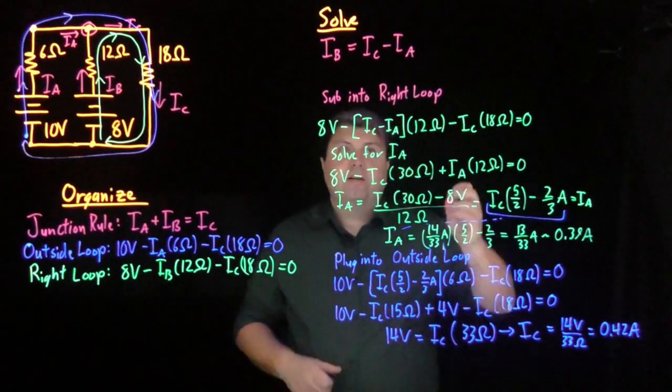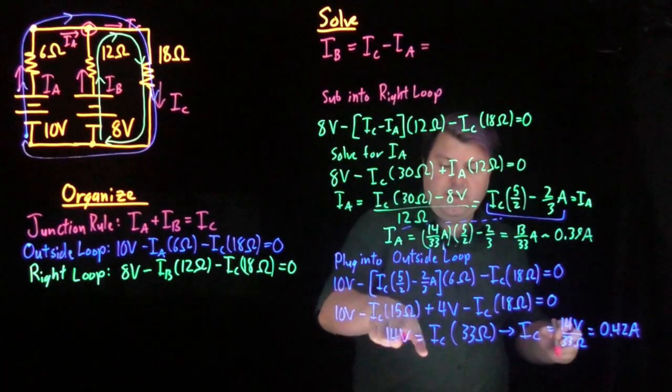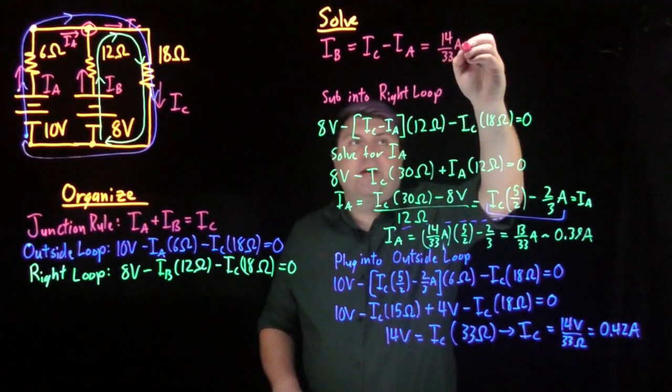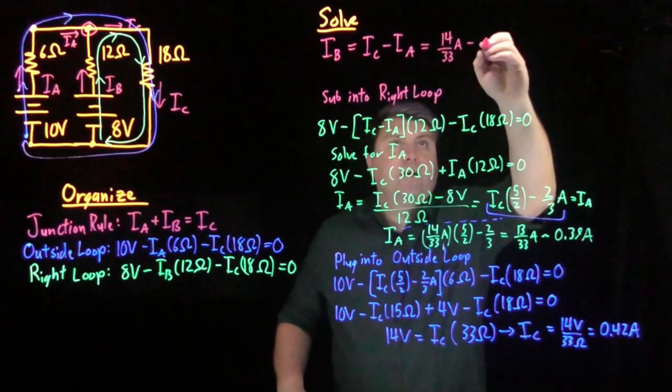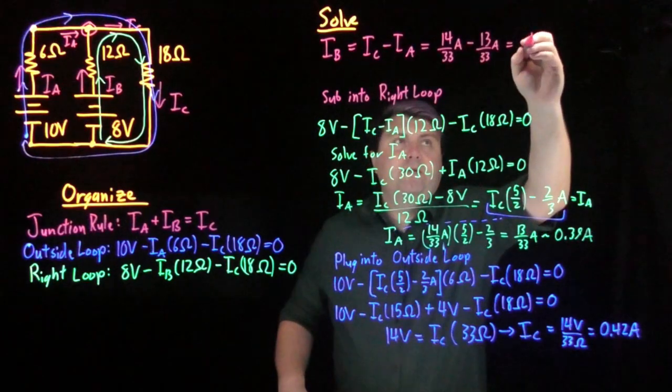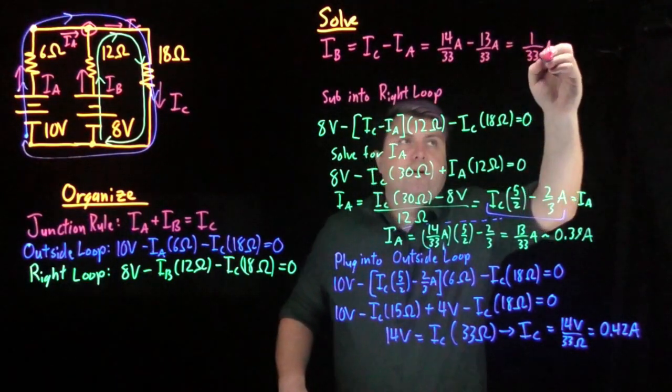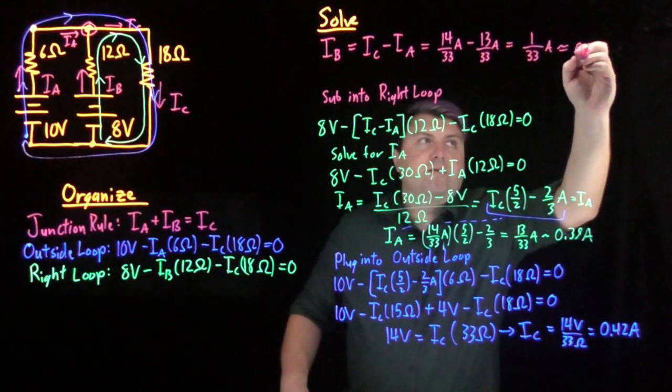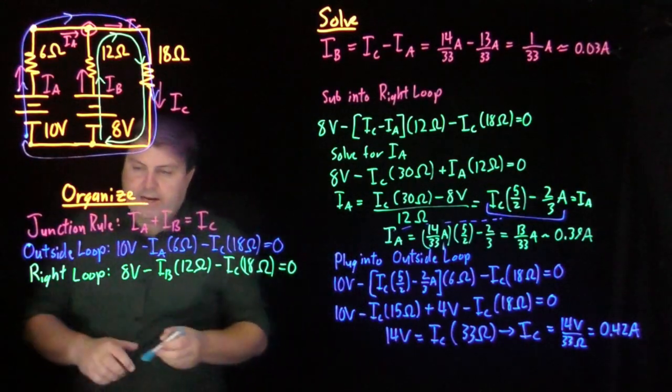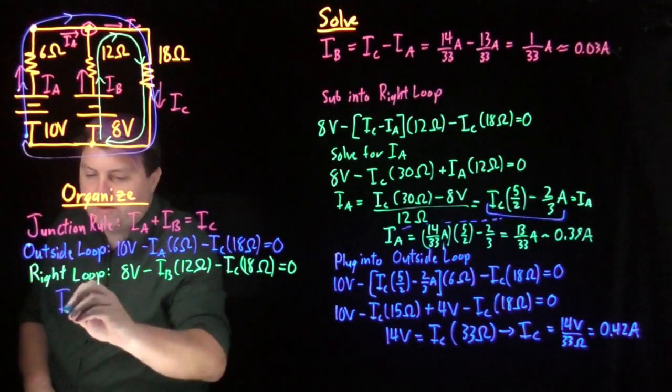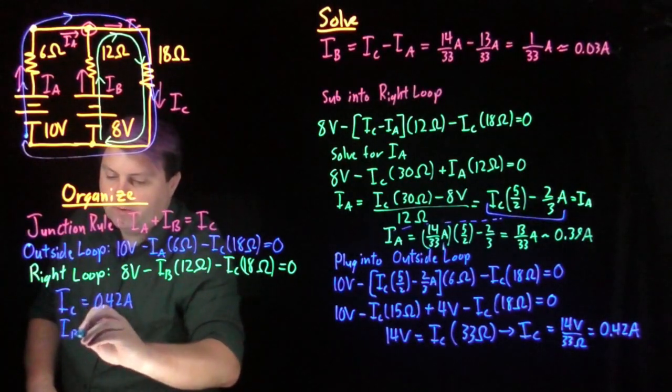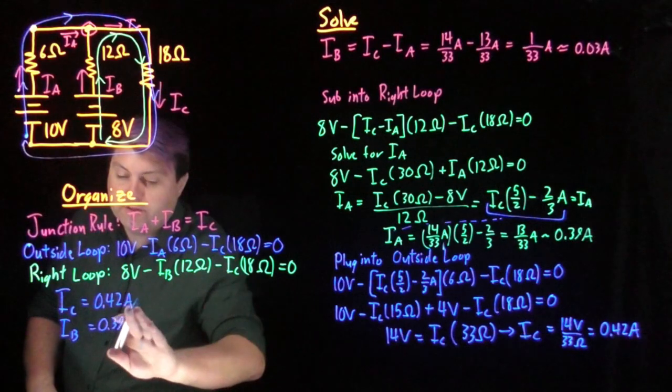If I go back to here, now my Ib is equal to Ic which is 14 thirty-thirds of an amp minus Ia which is 13 thirty-thirds of an amp. So 14 minus 13 is 1 over 33 of an amp, which we get to 0.03 amps. So from this I have that my current Ic is 0.42 amps, current Ia is 0.39 amps, and current Ib is 0.03 amps.